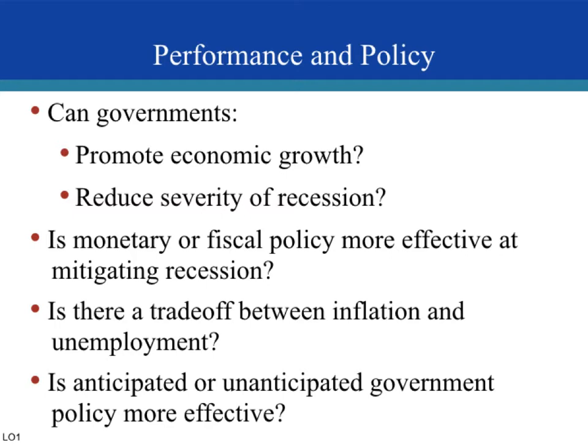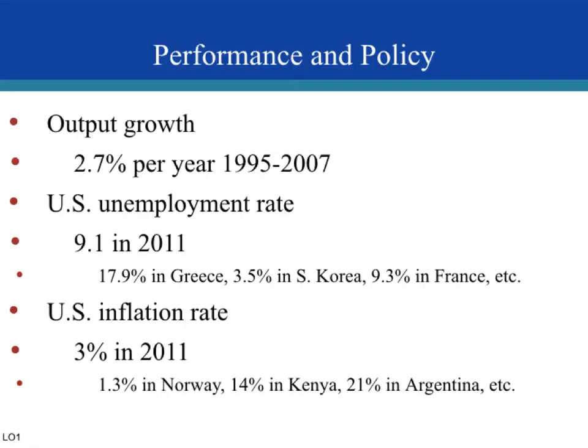Is monetary or fiscal policy more effective? We'll talk about that. Is there a trade-off between inflation and unemployment, and is anticipated or unanticipated government policy more effective? Between 1995 and 2007, there's been about 2.7 percent output growth per year on average. The unemployment rate in 2011 was 9.1 percent, but currently in the US it's 5.5 percent. The US inflation rate is usually around two to three percent on average.